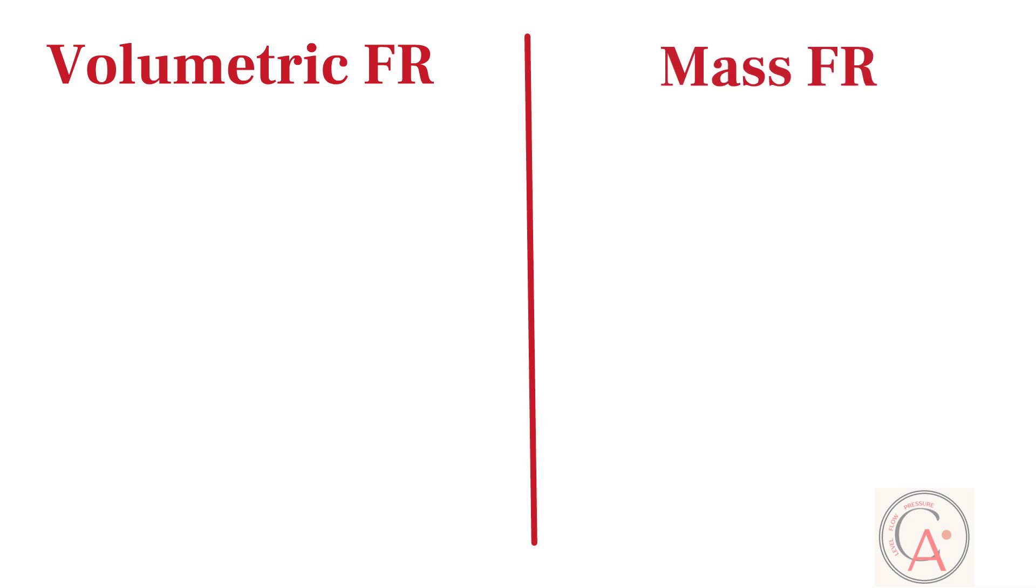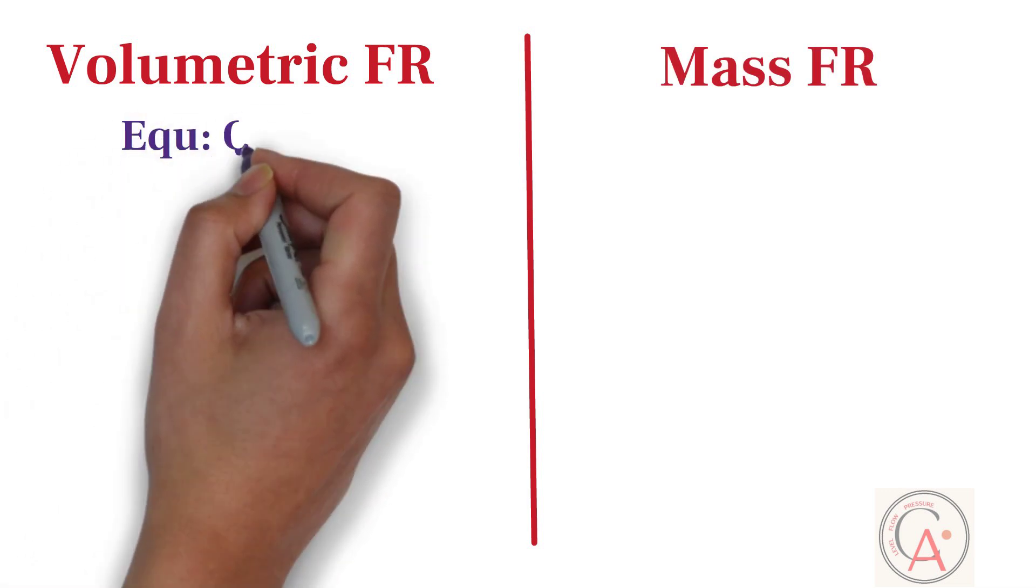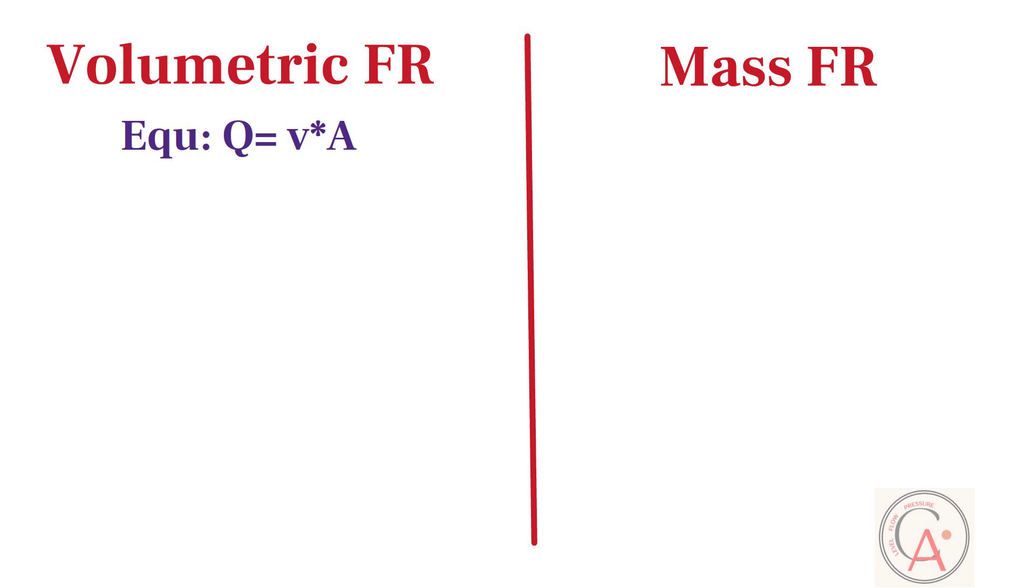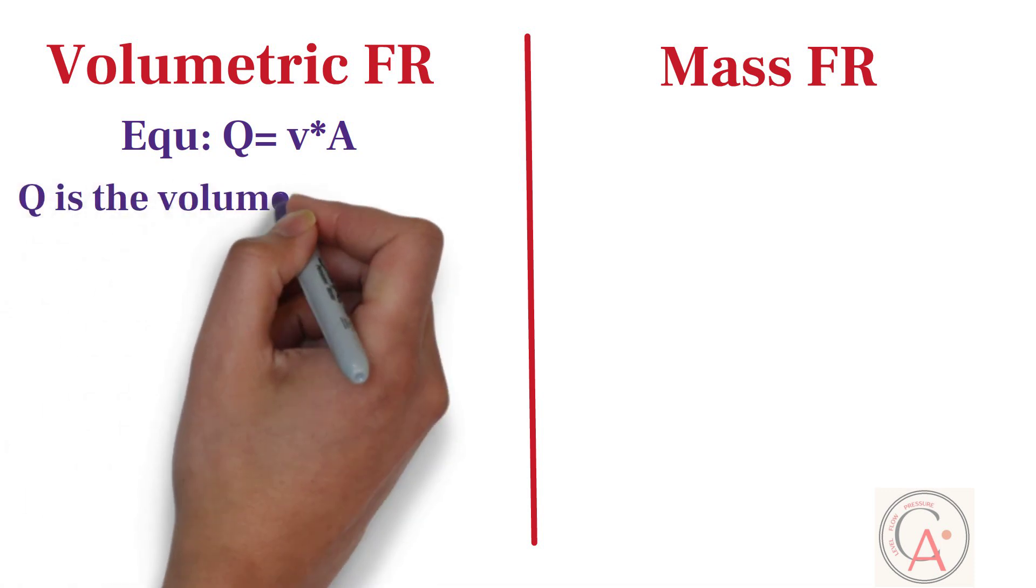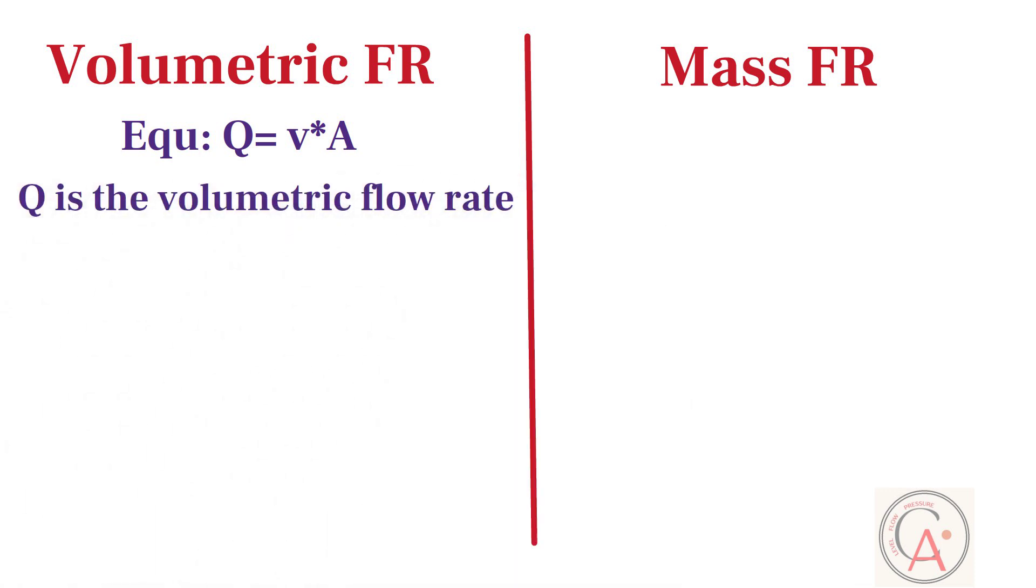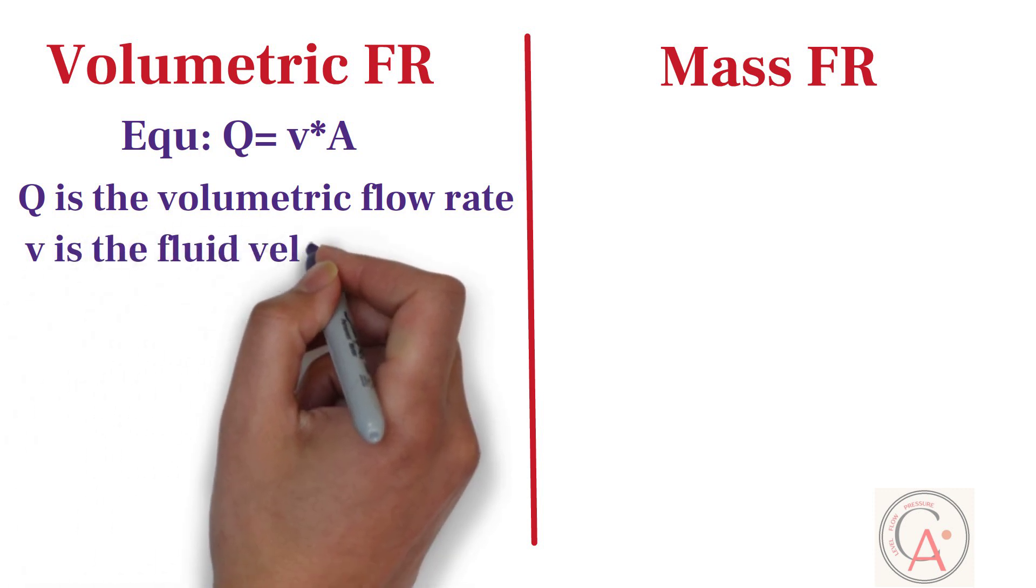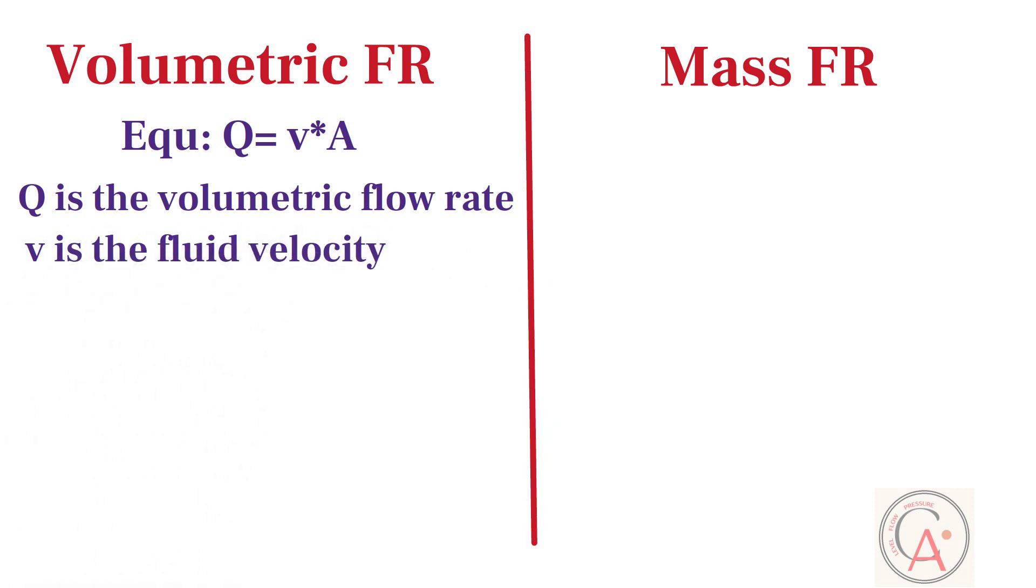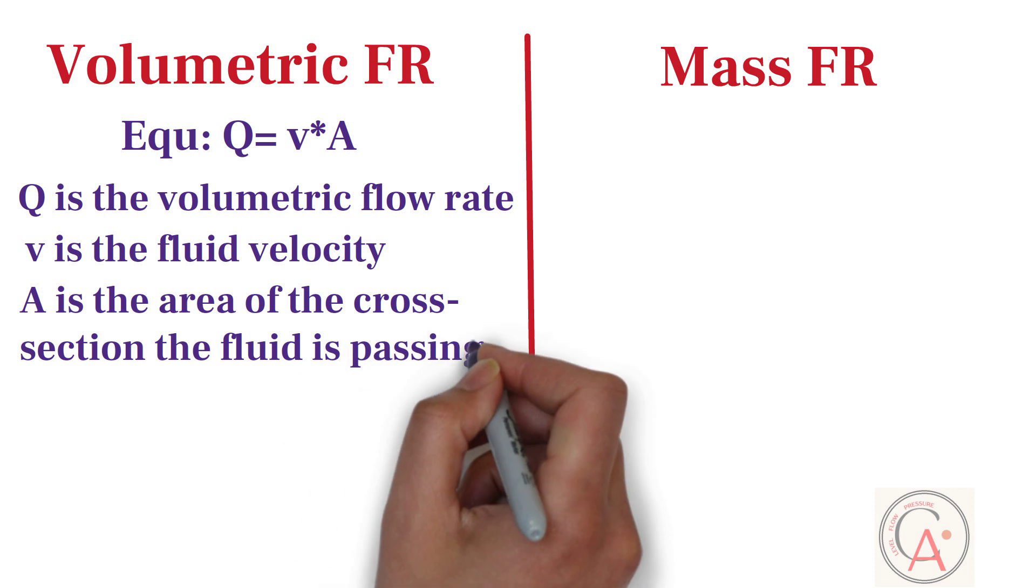The volumetric flow rate equation that relates to the flow velocity is Q is equal to v*A. Where Q is the volumetric flow rate, v is the fluid velocity, and A is the area of the cross section the fluid is passing.